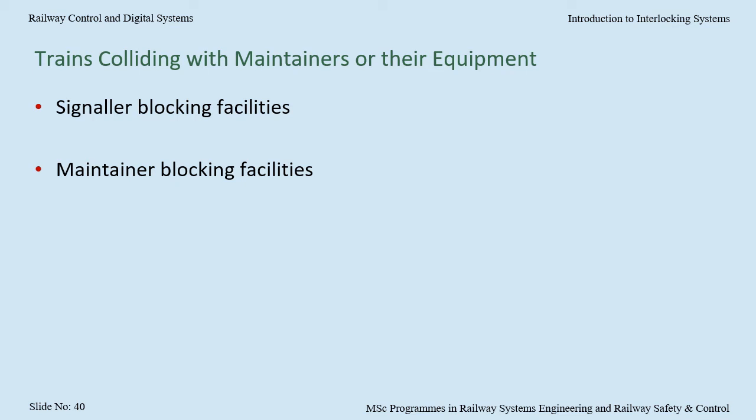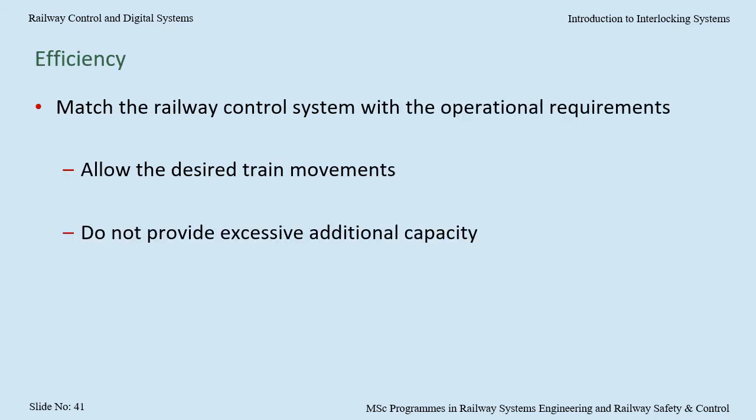The maintainer may also be provided with a device that prevents movement authorities from being issued. Right back at the beginning of this presentation, we stated that the purpose of a railway control system is to ensure the safe and efficient movement of trains. From the interlocking's perspective, the key item is matching the railway control system with the operational requirements. For instance, if the railway needs to run trains at a three-minute headway, then the railway control system needs to be arranged to achieve this.